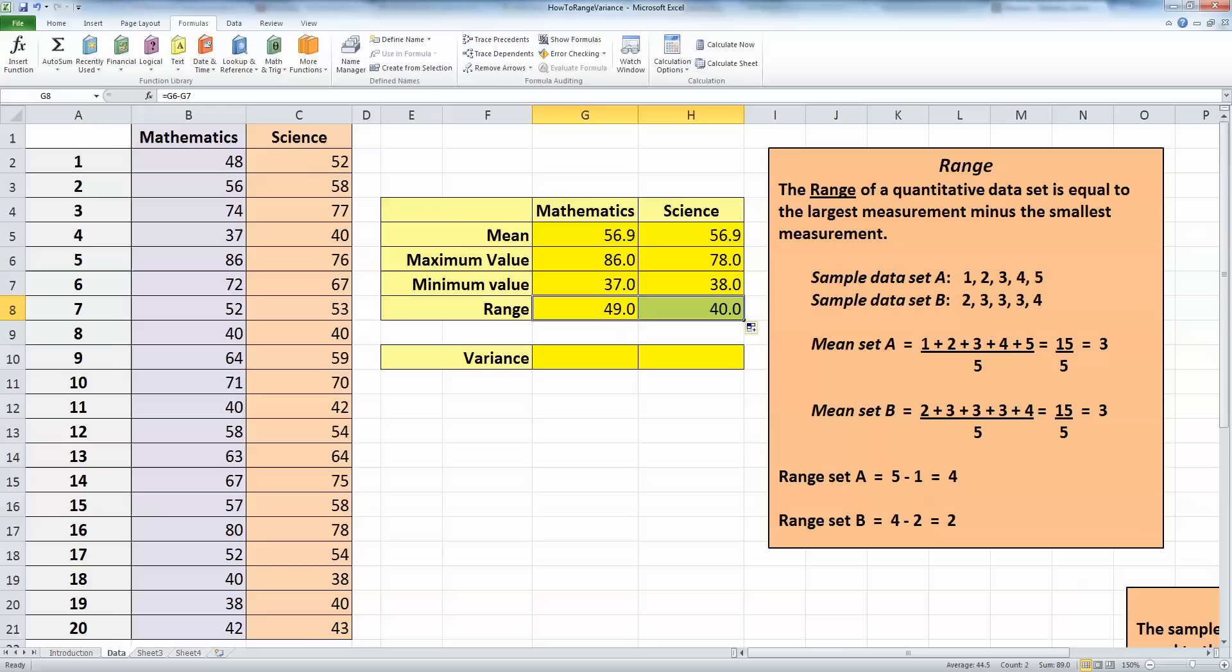And autofill, to copy the formula over, the data range for the science test is 40. So straight away I can see that my mathematics test, even though it has the same mean as the science test, is far more variable in the test scores. It's got a wider range of test scores.